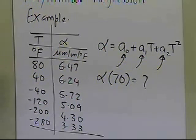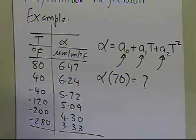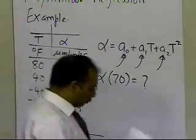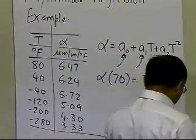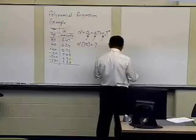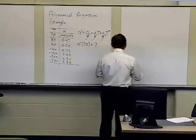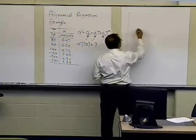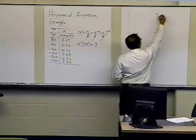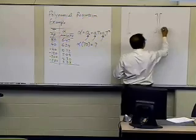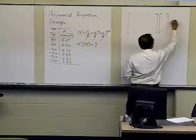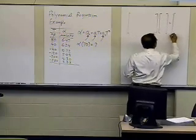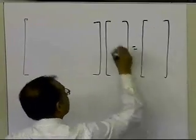From the previous segment we already know the formula for the polynomial regression model. I'm going to write it down here for this particular case — the second-order polynomial case. The constants a0, a1, and a2 can be found if we are able to solve a set of equations.